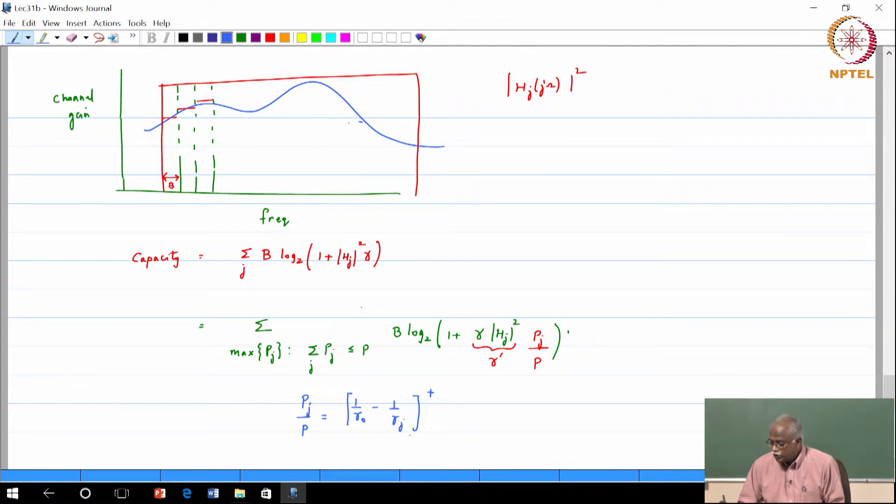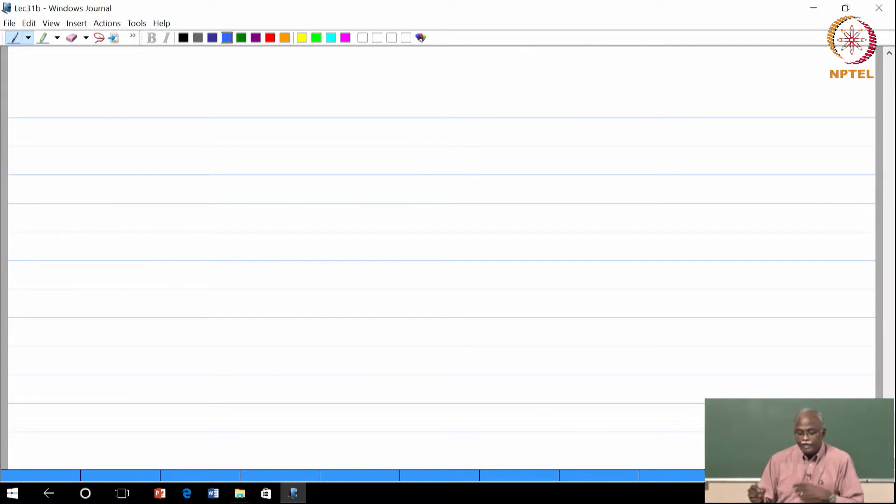So the key result is that when I have a wide band signal, first of all I am going to have frequency selective fading, and the process by which we will achieve capacity is I am going to quantize the SNR in each of those bands, and I am also going to do 1 over gamma water filling.